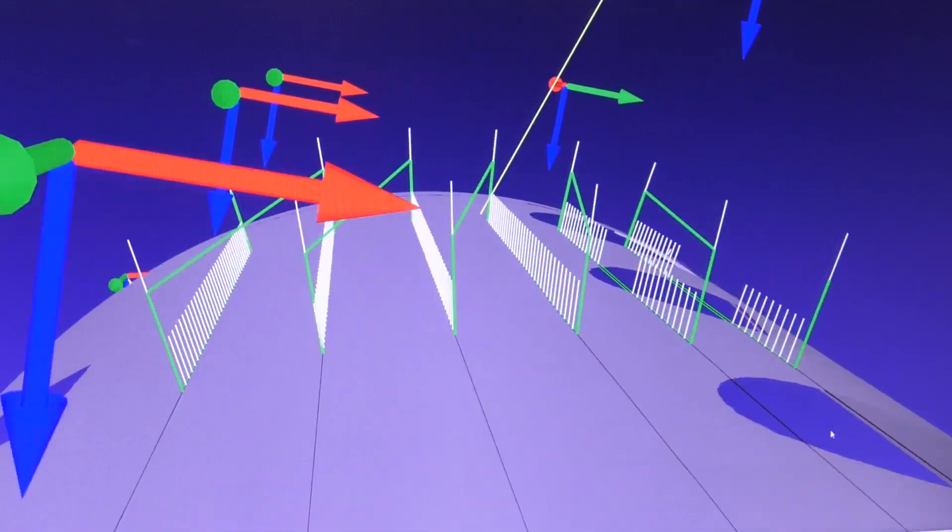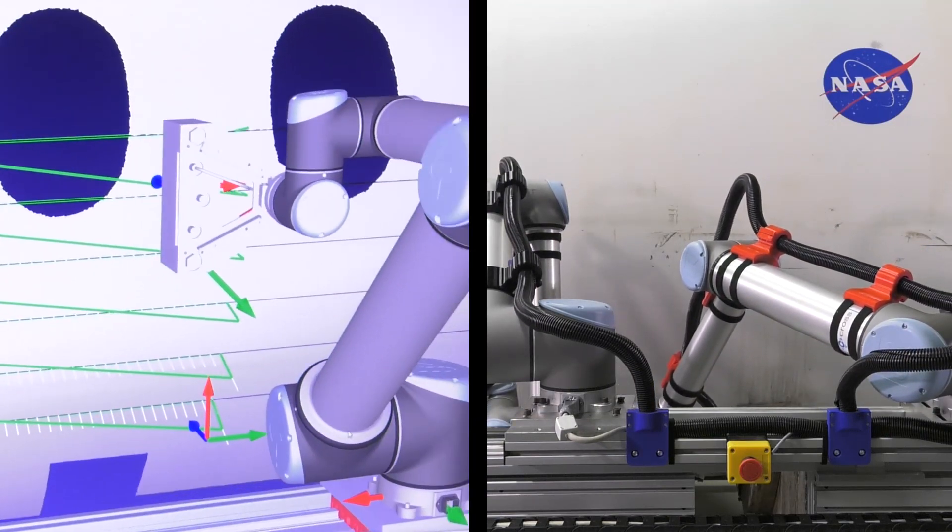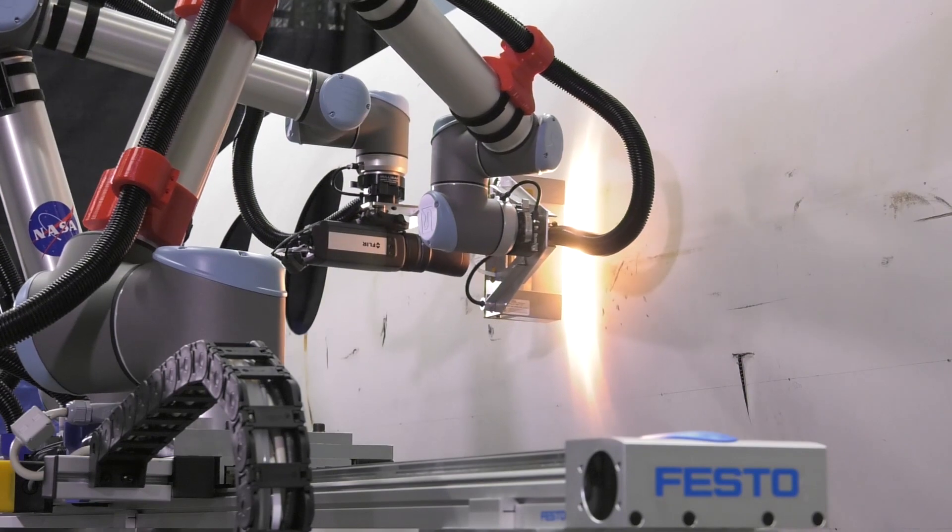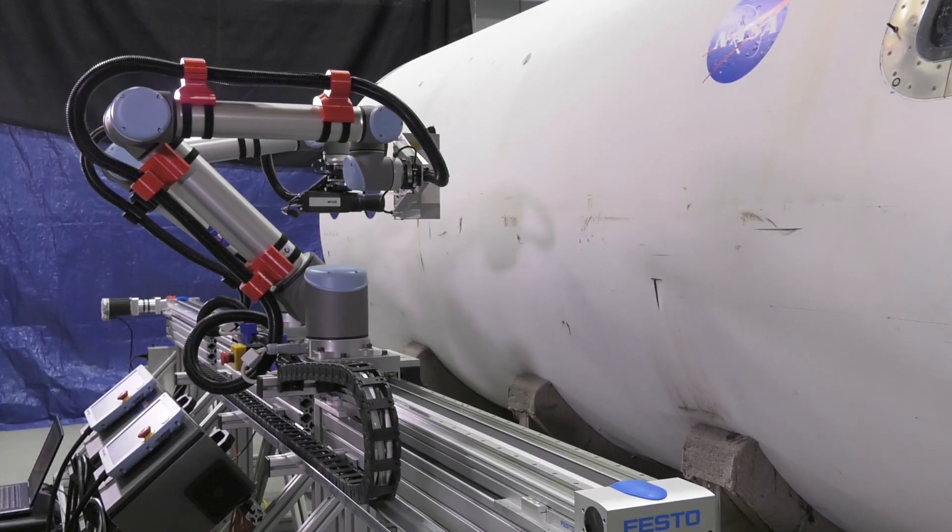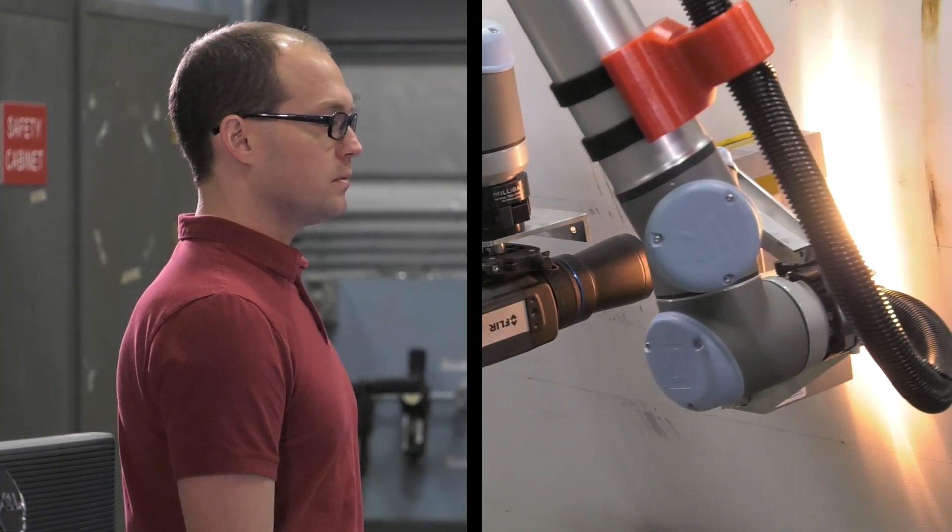What we're demonstrating here is using collaborative robots to do an inspection of an aircraft fuselage. They're collaborative robots not just because we have two robots working together, but also because they can work closely with humans without having any kind of safety or exclusion zone around them.